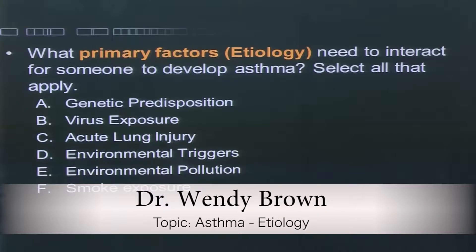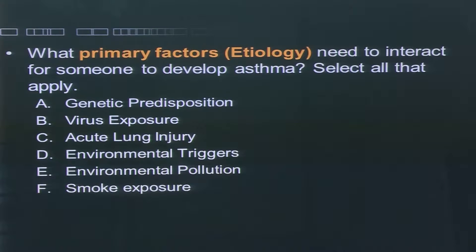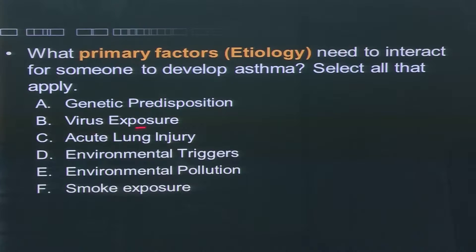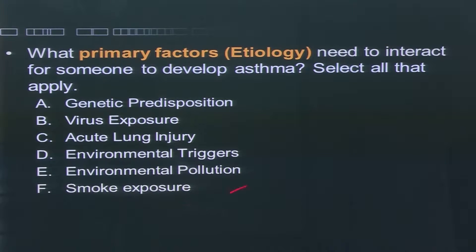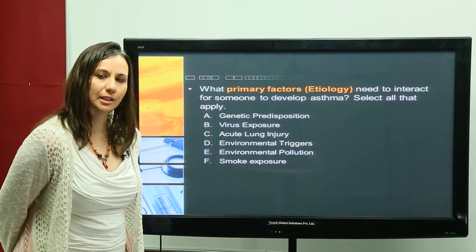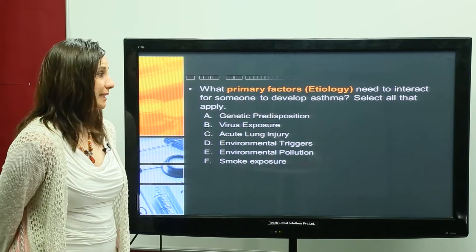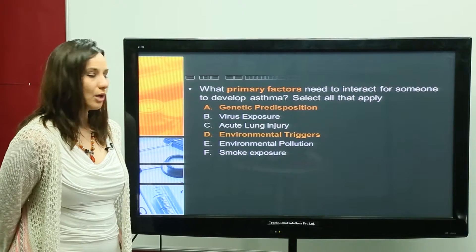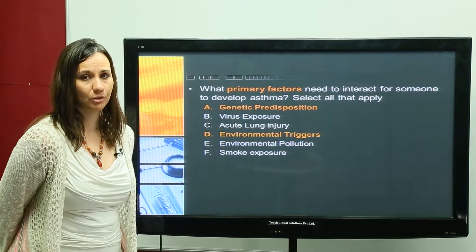Let's look at the factors that prime a person to develop asthma. What primary factors or etiology must interact for someone to develop asthma — genetic predisposition, viral exposure, acute lung injury, environmental triggers, environmental pollution, or smoke exposure? If you chose genetic predisposition and environmental triggers, those are the primary etiological factors associated with asthma.